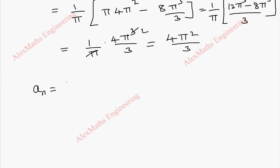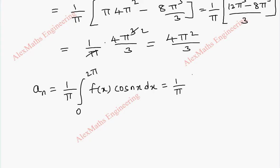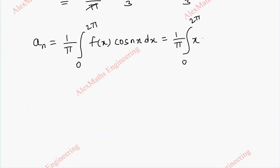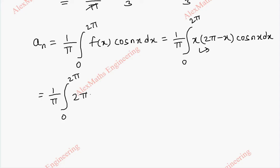Now we have to find aₙ. The formula for aₙ is (1/π) ∫₀²π f(x)·cos(nx) dx. Substituting f(x) = x(2π - x), we get (1/π) ∫₀²π x(2π - x)·cos(nx) dx. Multiplying inside, this becomes (1/π) ∫₀²π (2πx - x²)·cos(nx) dx.